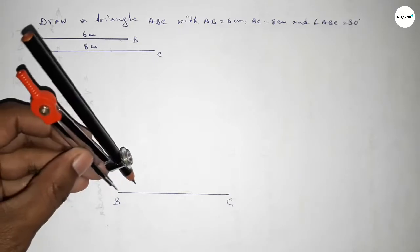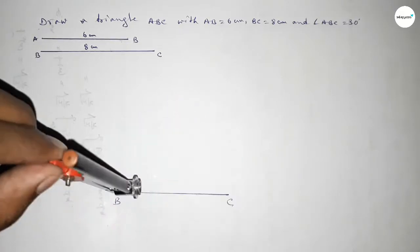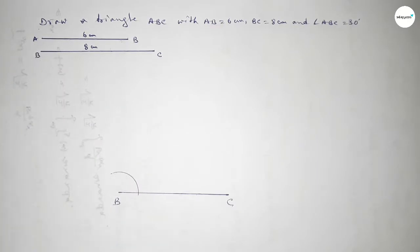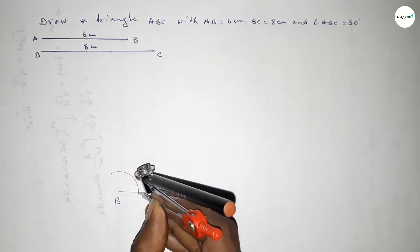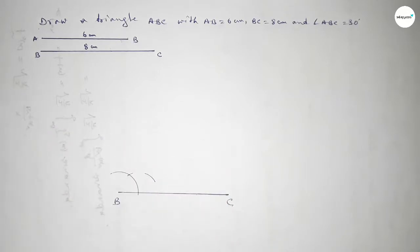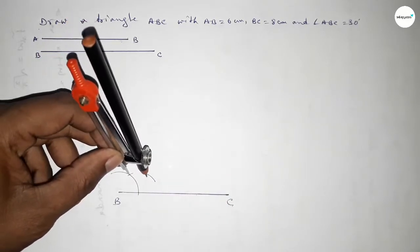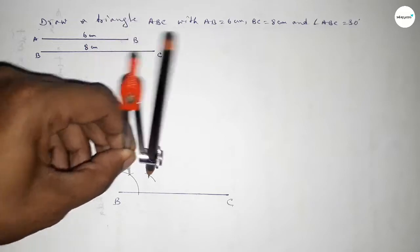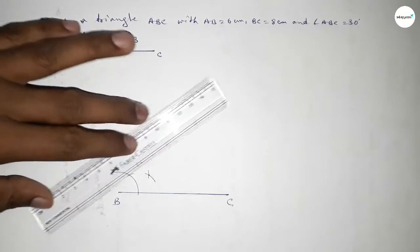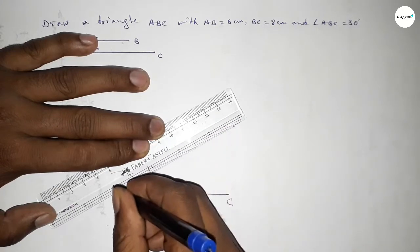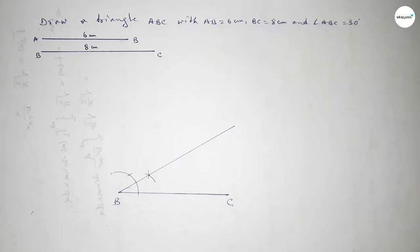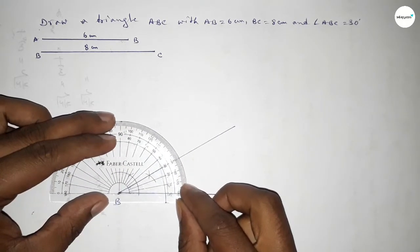Now we have to draw a 30-degree angle at point B. Putting the compass on point B and taking any length, drawing an arc. With the same length, putting the compass here and cutting here, drawing another arc — again with the same length — so both curves intersect at two points. Joining these points gives us the 30-degree angle.